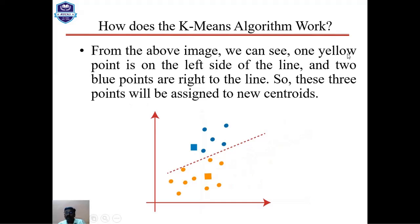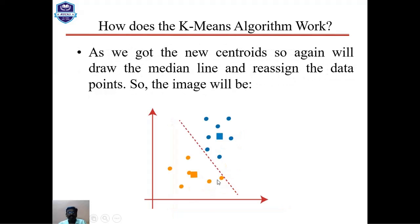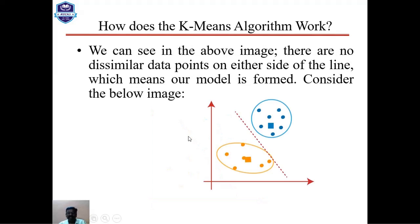From the image we can see one yellow point is on the left side of the line and two blue points are on the right side, so these three points are reassigned to the new centroid. Since reassignment has taken place, we go back to Step 4 to find new centroid K points, repeating the process by finding the center of gravity. After reassigning data points again, we can see there are no dissimilar data points on either side of the line, which means our model is formed.